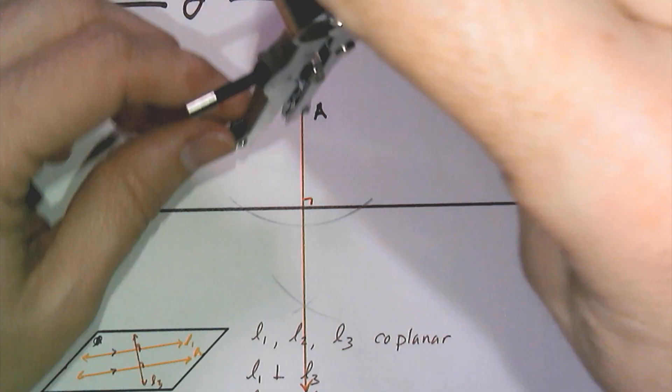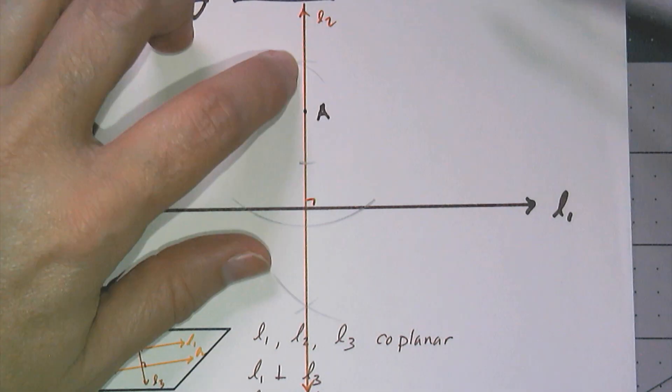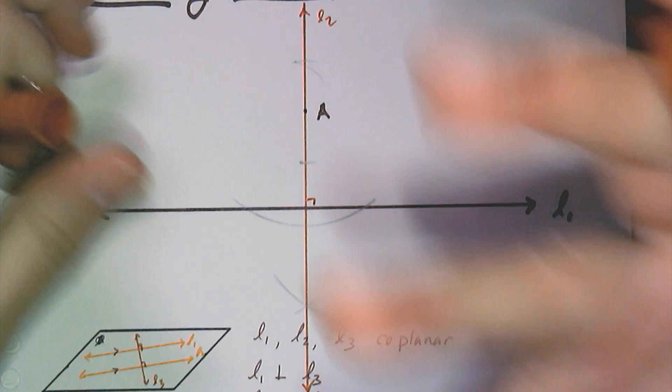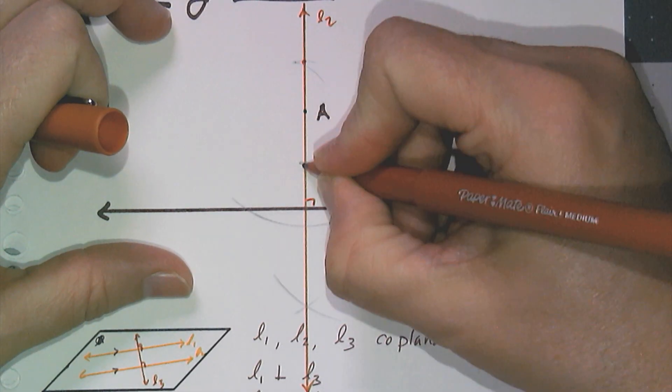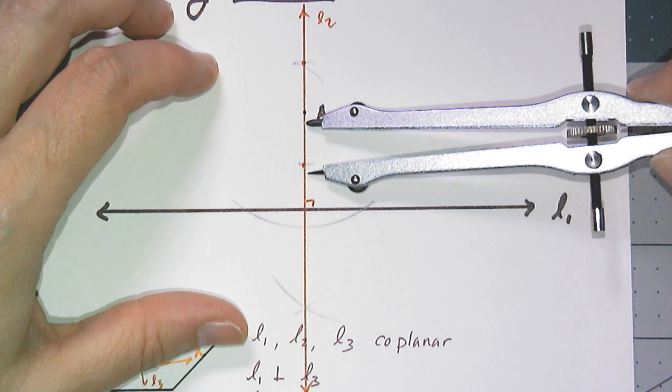A is the midpoint. So I have that arc there and that there. So these two points here and here create a line segment where A is the midpoint.